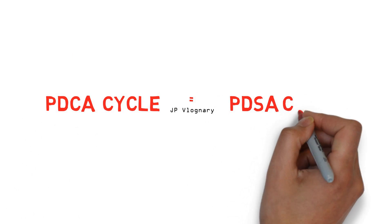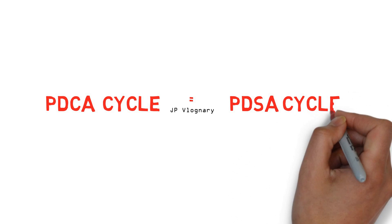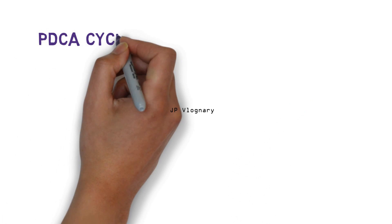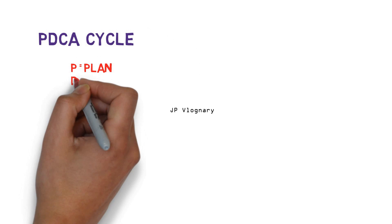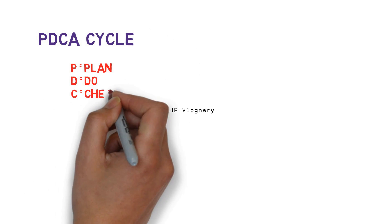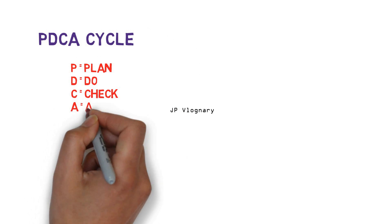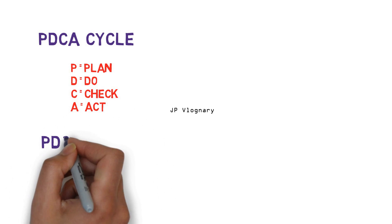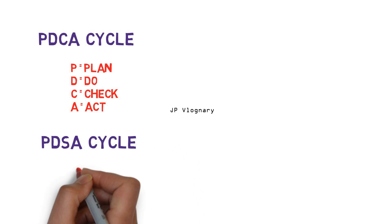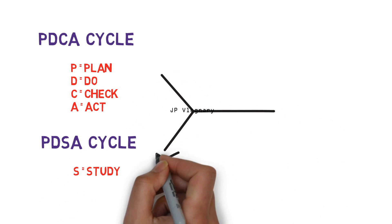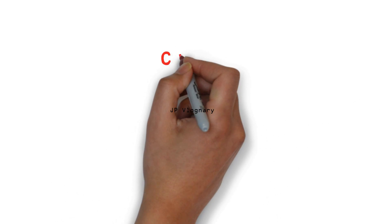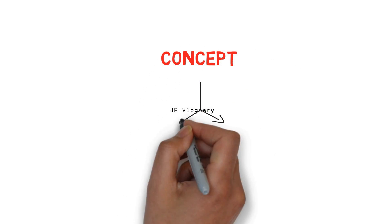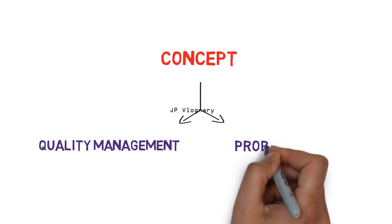After some time, this cycle became known as the PDSA cycle. P stands for Plan, D stands for Do, C stands for Check, and A stands for Act. In the PDSA cycle, the S stands for Study. Both principles are essentially the same.